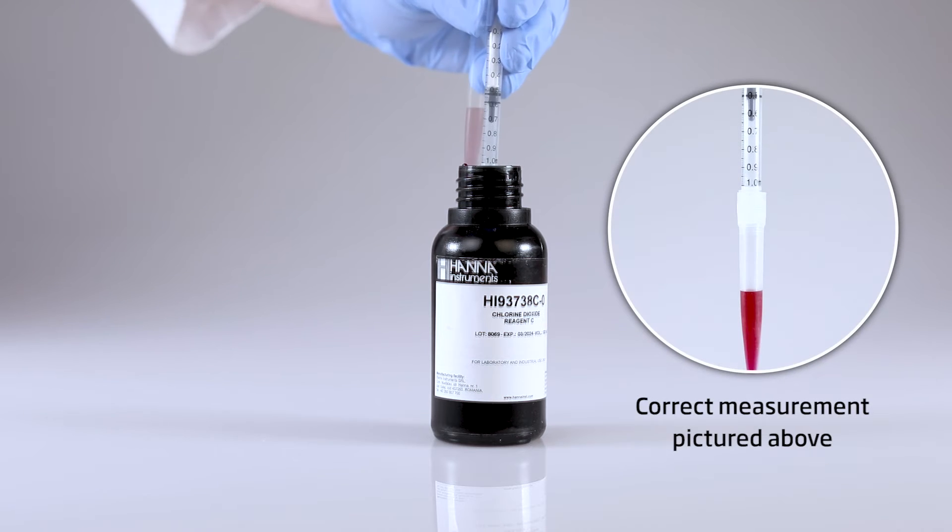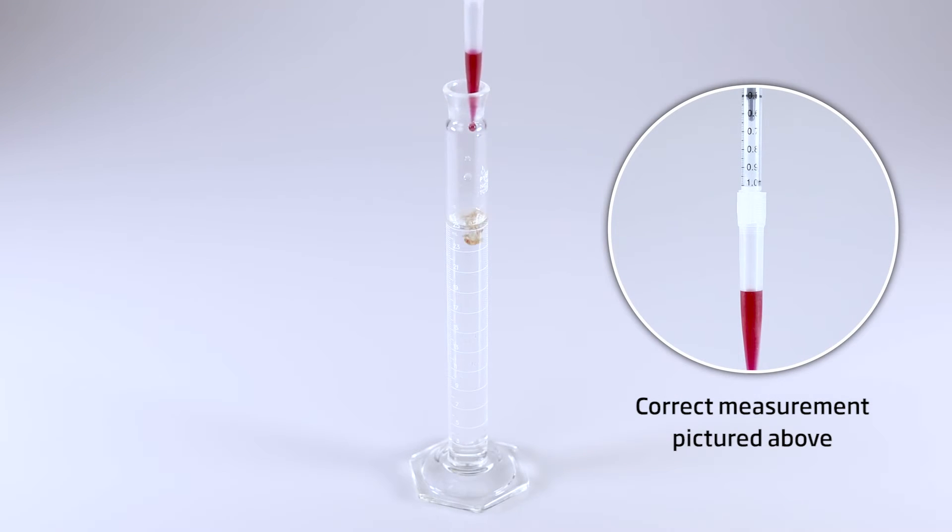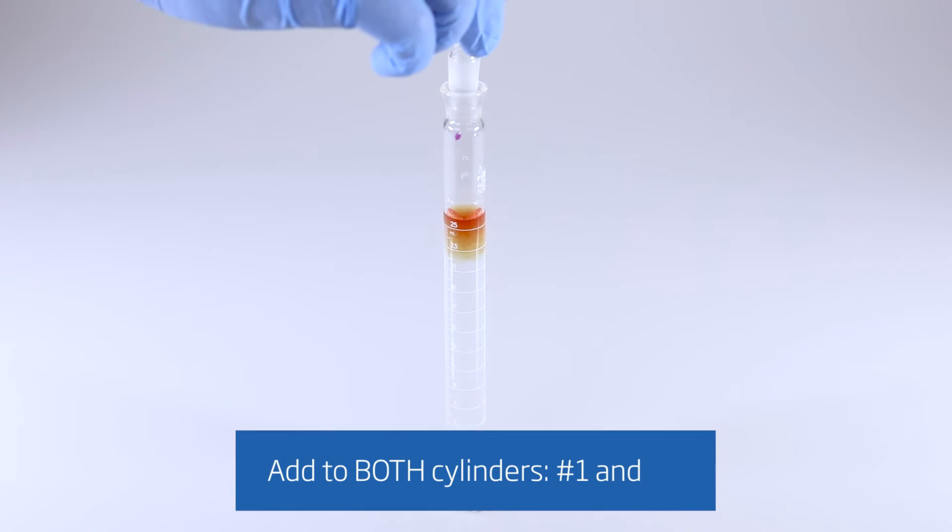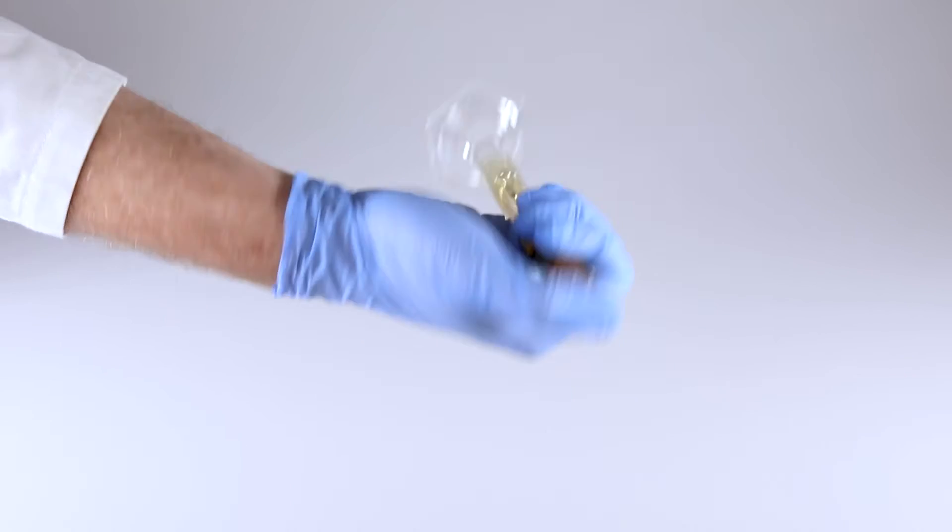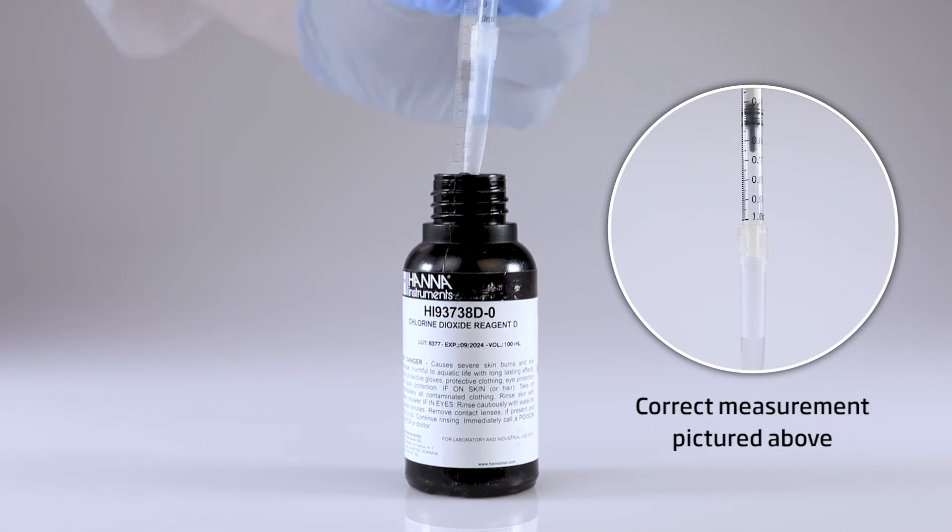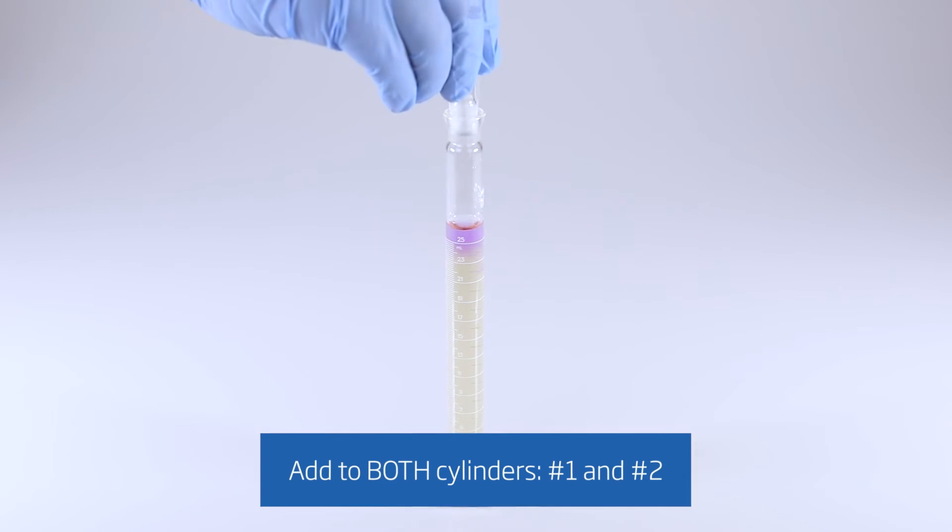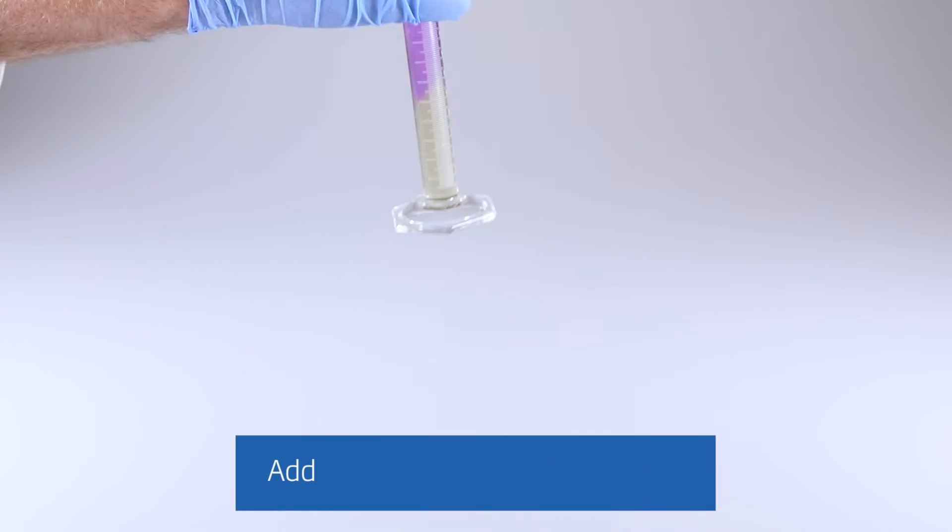Next, using a different syringe, add 0.5 milliliters of reagent C to each cylinder. Cap the cylinders and invert several times to mix. After that, take your final syringe and add 0.5 milliliters of reagent D to each cylinder. Cap the cylinders and invert several times to mix.